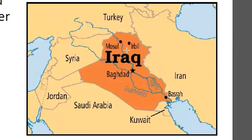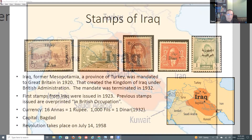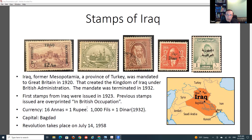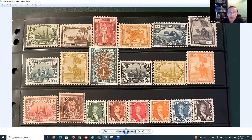I have a small map of Iraq here to show where it's located. You have Turkey, Syria, Jordan, Saudi Arabia, Kuwait, and Iran - Iraq is pretty much in the middle of all of that. Now I'm going to show you the stamps - they are very colorful, very nice stamps.